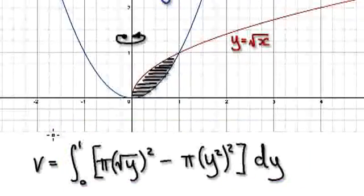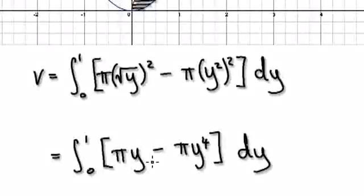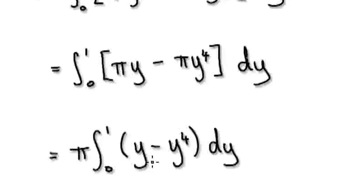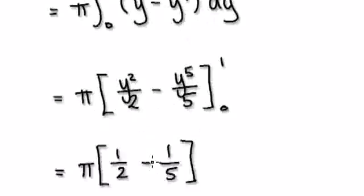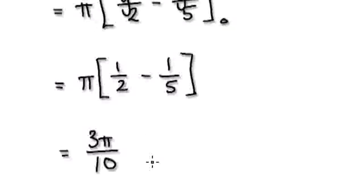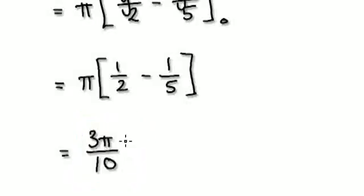So now evaluate this. That would then give you this, and then it will give you 3π over 10. So it's consistent with our shell/cylinder method. So doing it the washer way gives the same result as doing it the cylinder way.